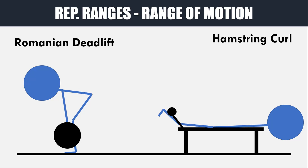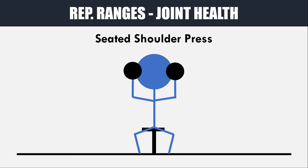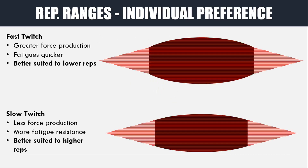For example, a Romanian deadlift will be better suited to the 6 to 10 rep range, while a hamstring curl may be better suited to the 8 to 15 rep range. How do the individual's joints handle the loading? For example, if a trainee has a history of shoulder pain, it may be best to use lighter loads with higher repetitions on any shoulder exercises. If a joint has never experienced any issues, then lower reps may be permitted. And lastly, individual preference plays a role in which rep ranges to select. Some people generally feel that they get more of a stimulus from higher reps, and some prefer lower reps. This may have something to do with muscle fibre types from both a genetic standpoint and their training history.